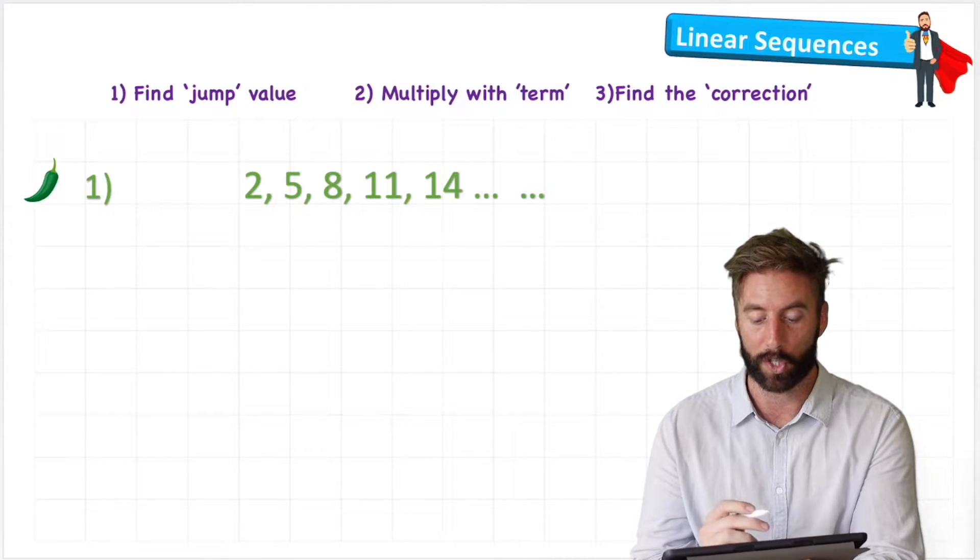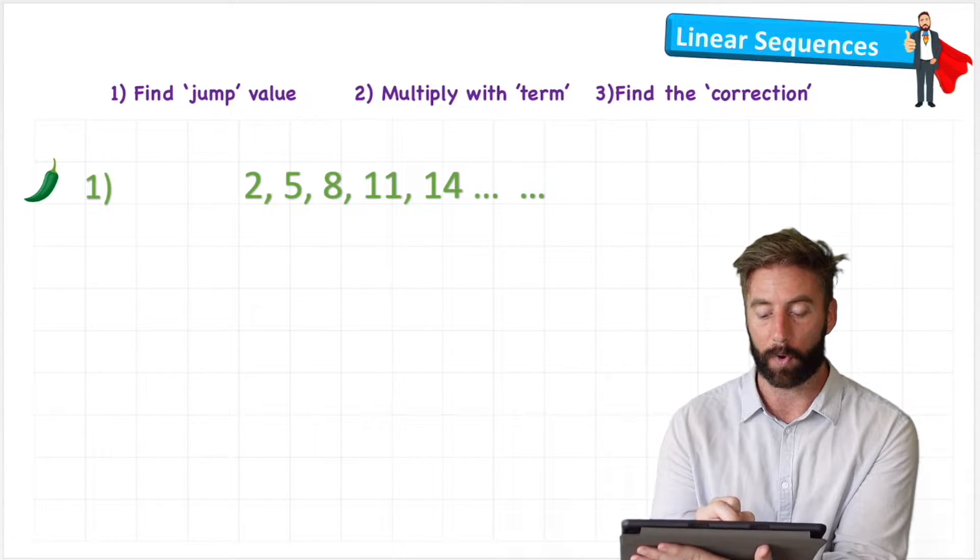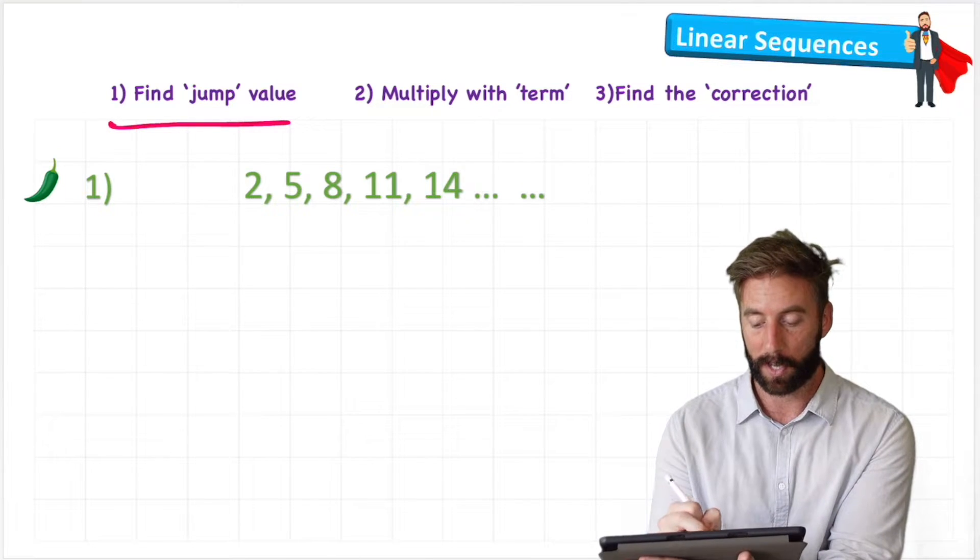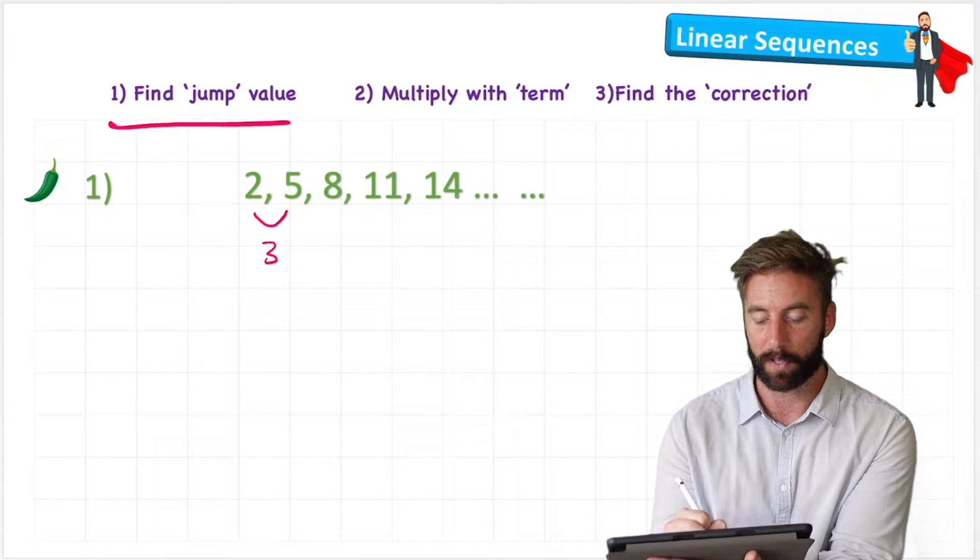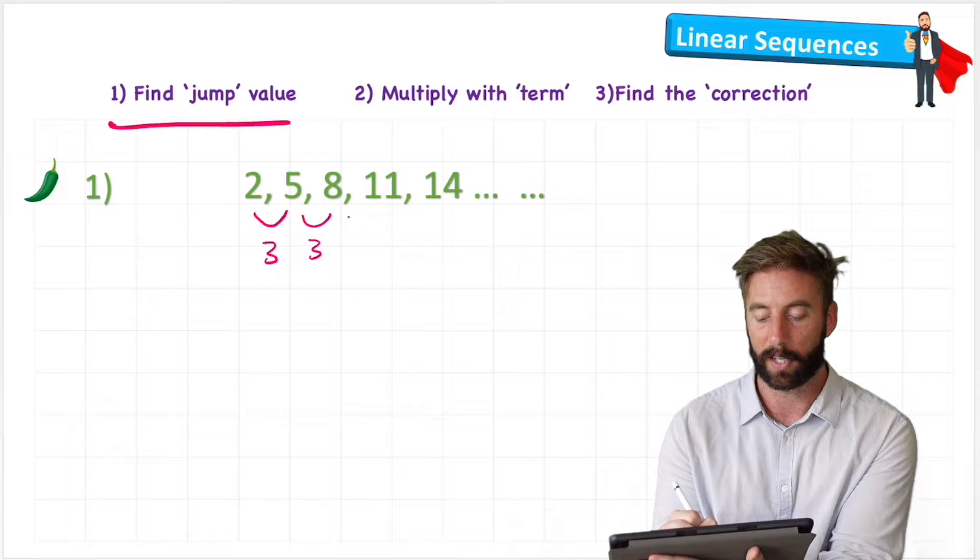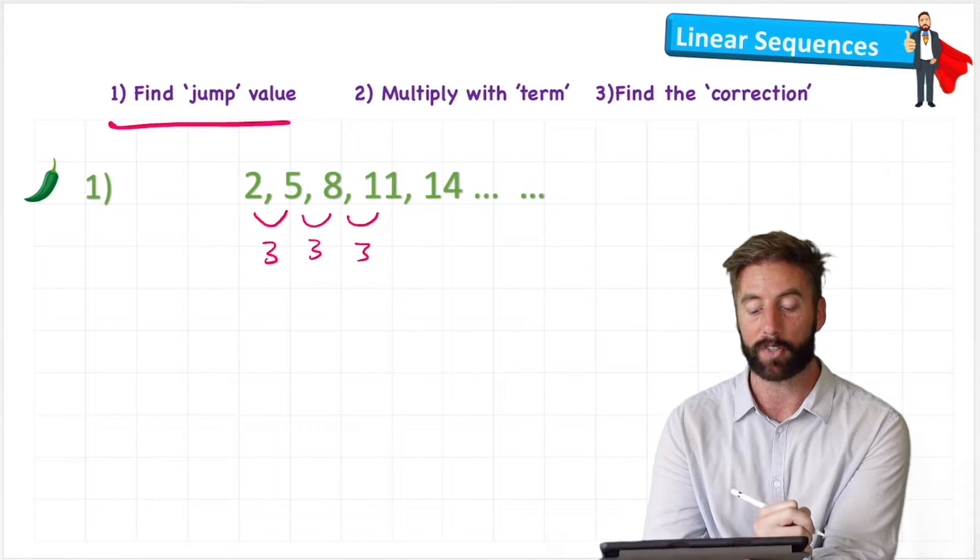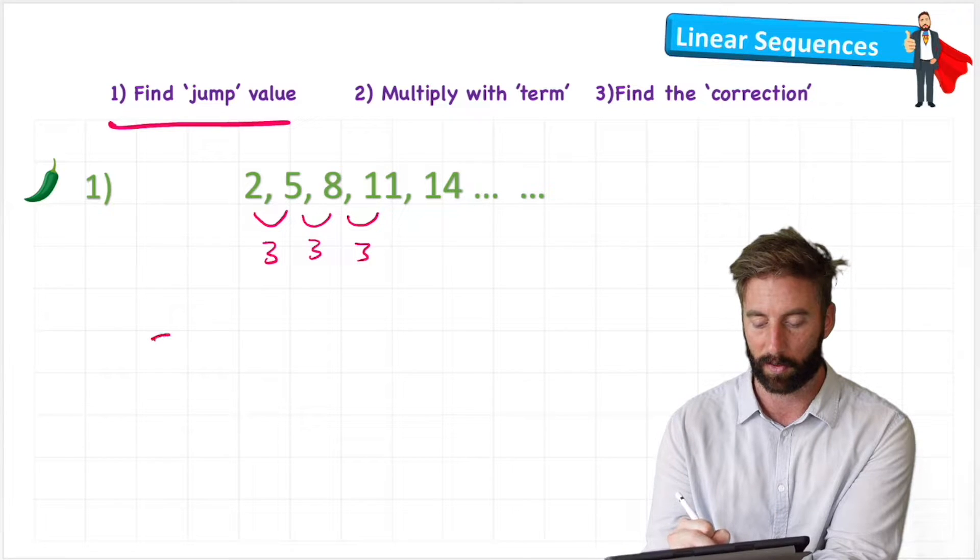Let's have a look at what I mean with question 1. And let's look at step 1, finding the jump value. So as we said before, the gap between 2 and 5 is 3, 5 and 8 is 3, 8 and 11 is 3, etc. So my jump value for this sequence is 3.